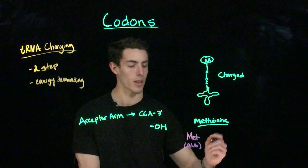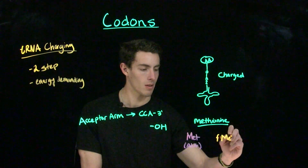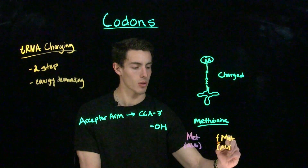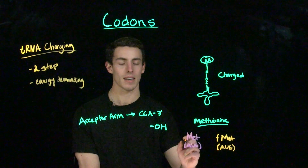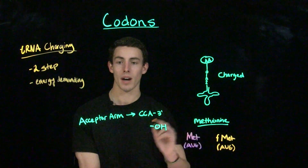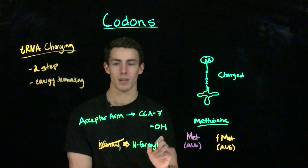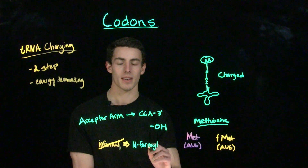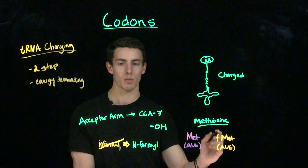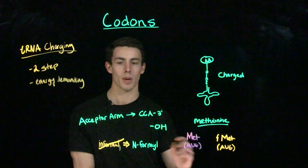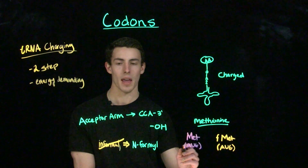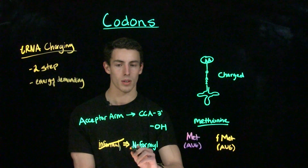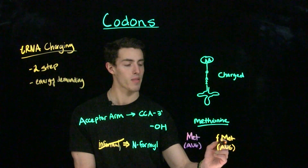In prokaryotes, it's called fMET, which stands for formyl-methionine. Formyl-methionine also corresponds to the AUG codon. The only difference is that formyl-methionine has a formyl group — like an aldehyde — on the N-terminus of this methionine. So we would expect to find formyl-methionine at the N-terminus of a prokaryotic polypeptide, and regular methionine at the N-terminus of a eukaryotic polypeptide. Both correspond to the same codon, AUG, which is our start codon.